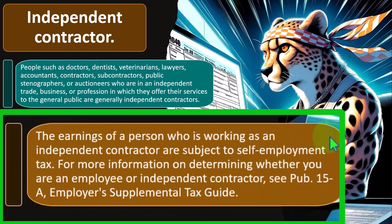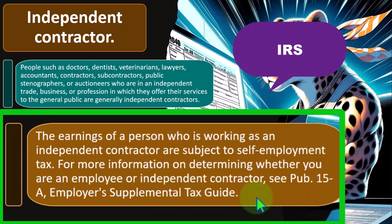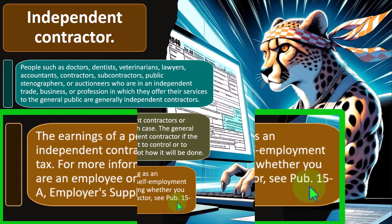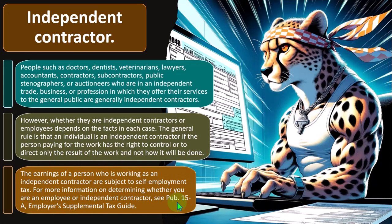The earnings of a person working as an independent contractor are subject to self-employment tax. For more information on determining whether you are an employee or independent contractor, see Publication 15-A, Employer's Supplemental Tax Guide. If you're unsure whether you're a contractor or not, think about the pros and cons of each classification — and remember that IRS resources tend to lean toward the employee classification since it gives them more control.